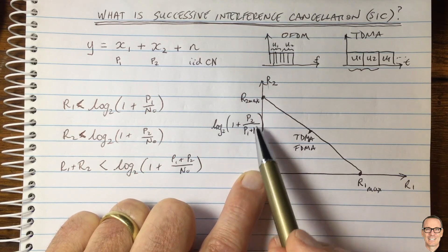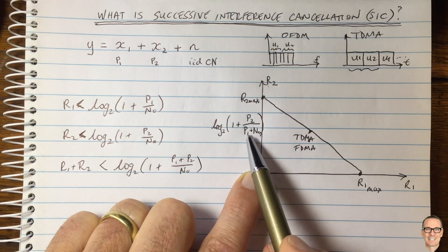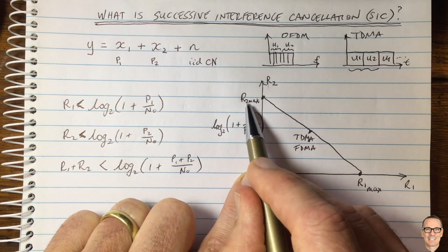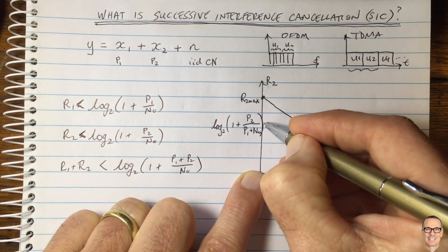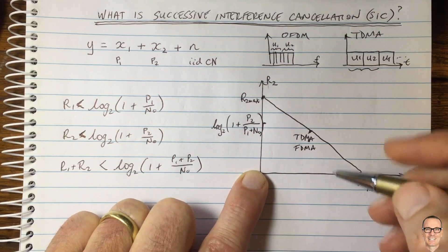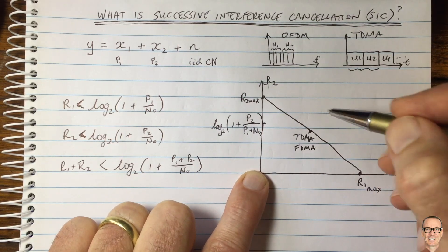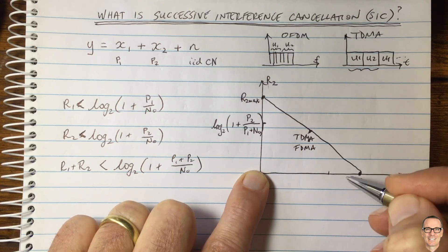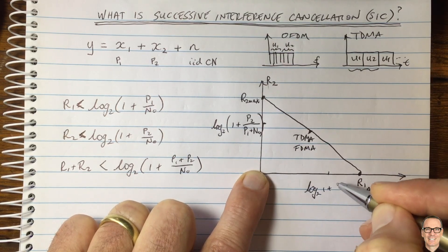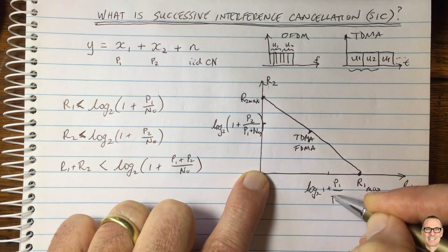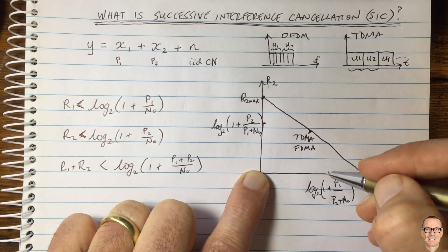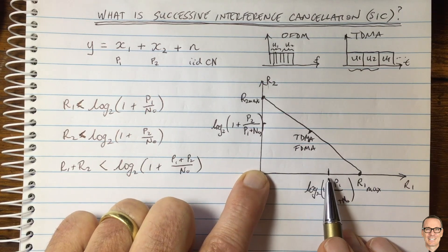The noise for user 2 has increased by an amount P1, so this rate value will be lower than R2 max. The same thing holds on the other axis: there is a rate for user 1 — log base 2 of one plus power 1 divided by power 2 plus N0 — which is the rate achievable for user 1 when both users are transmitting simultaneously.